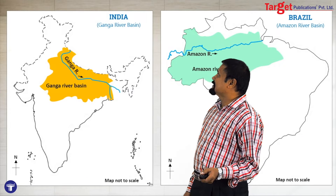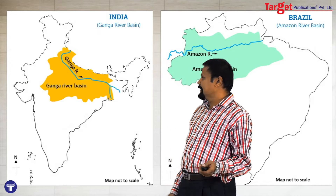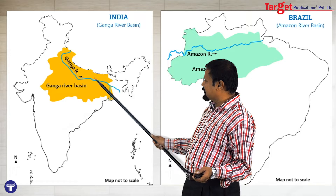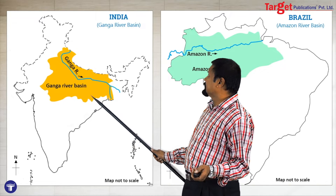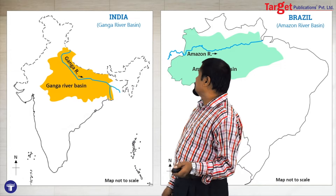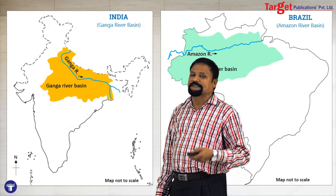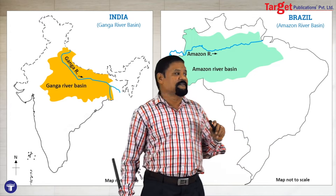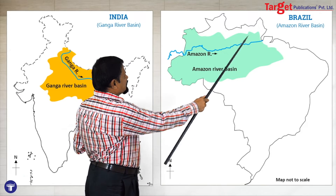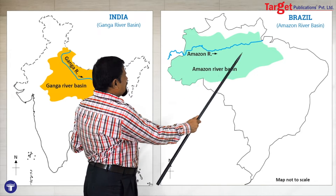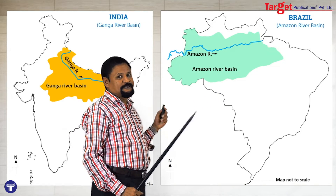If the question is about the Ganga River Basin, you can draw the Ganga River Basin. If the question is to compare the population density or urbanization in the Ganga River Basin as well as the Amazon River Basin, you have to show India with the Ganga River Basin already drawn, and then also show the Amazon River Basin so you can compare both nations.